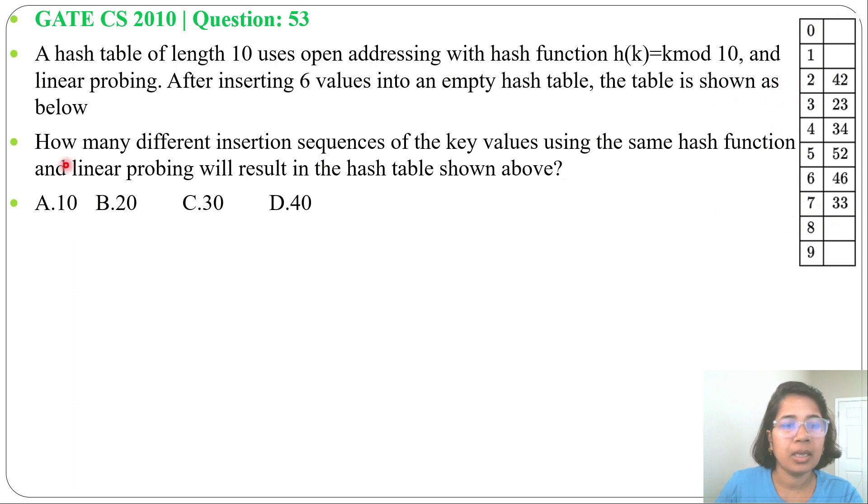This is the hash table. How many different insertion sequences of the key values using the same hash function and linear probing will result in the hash table shown above? And 4 options are given.